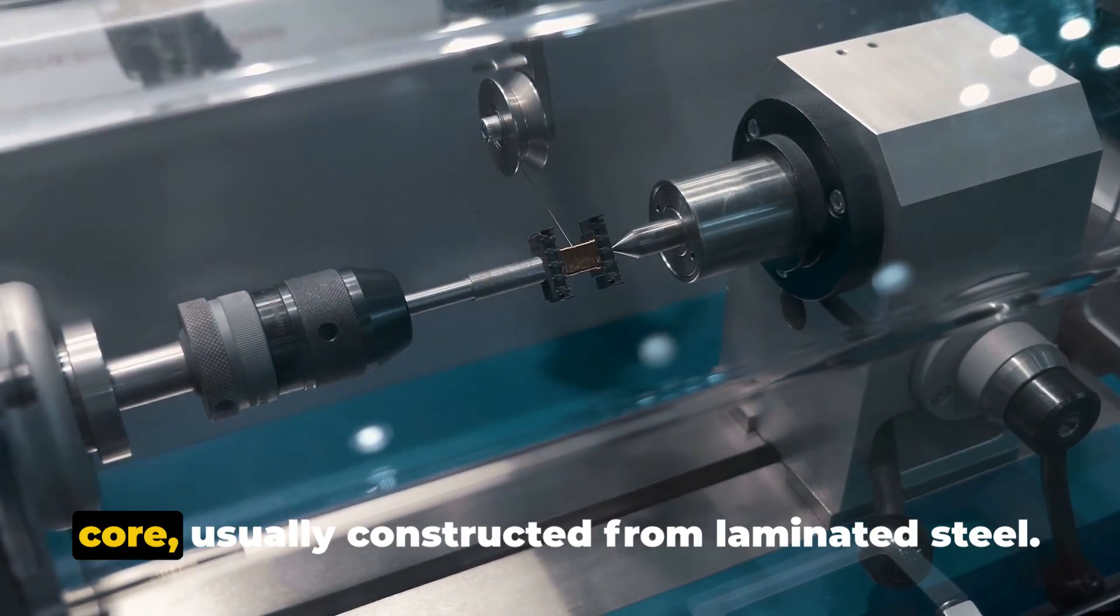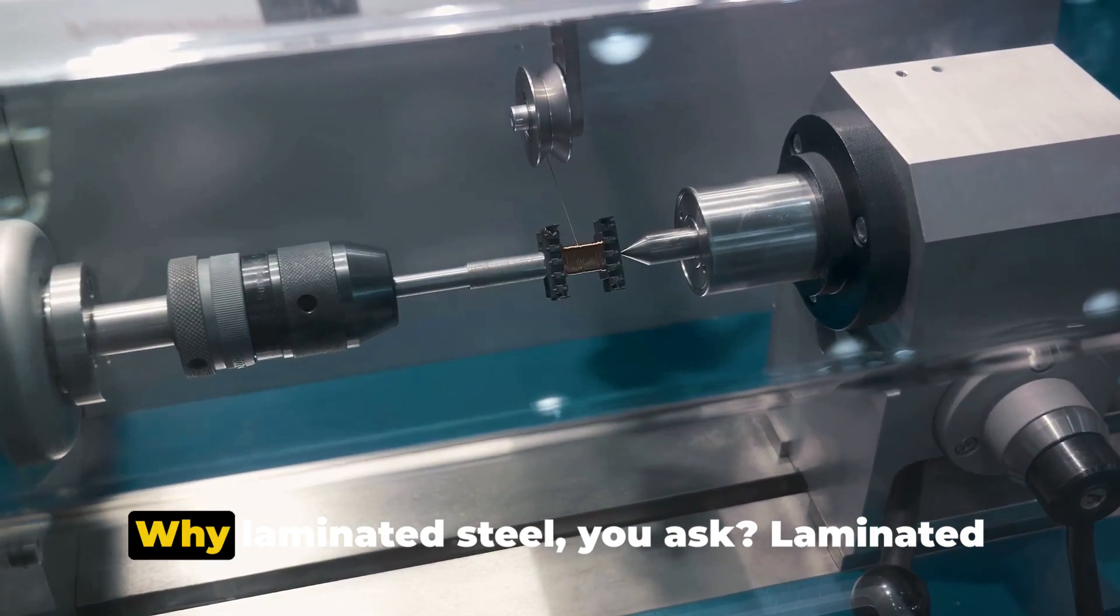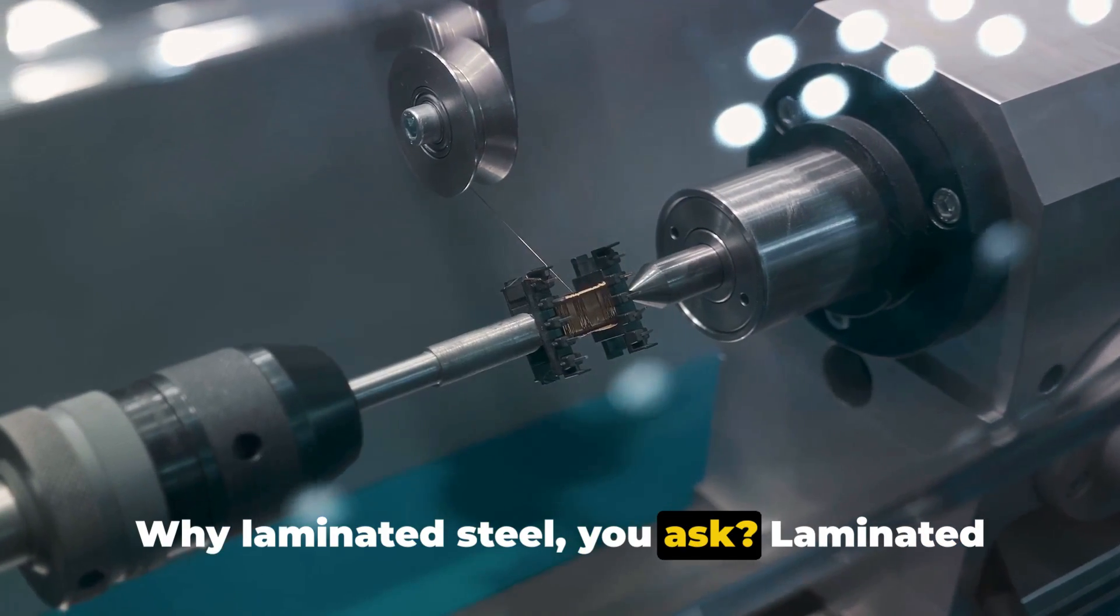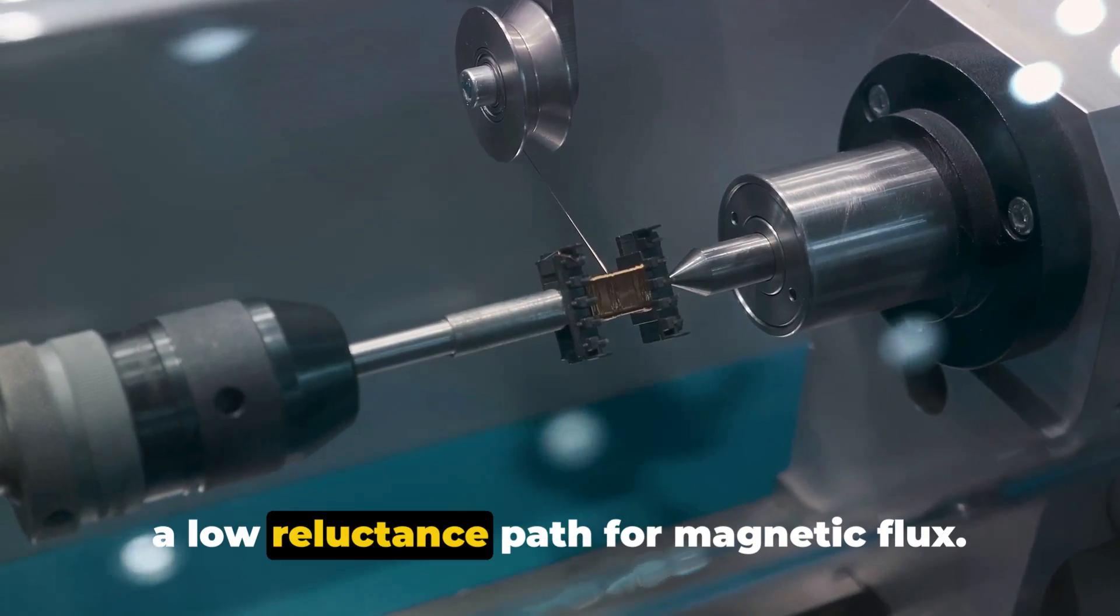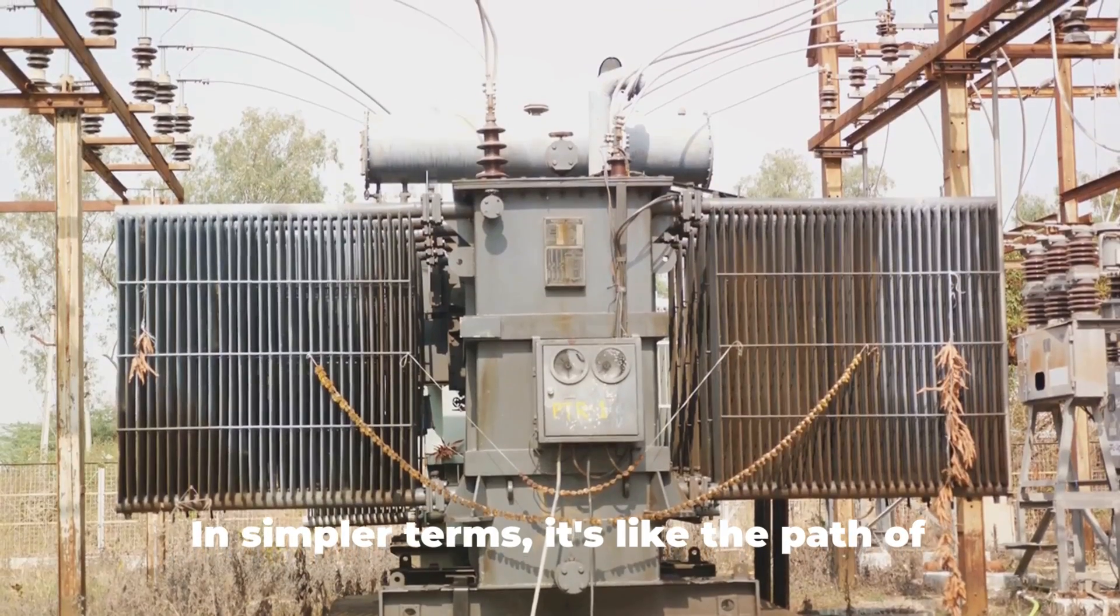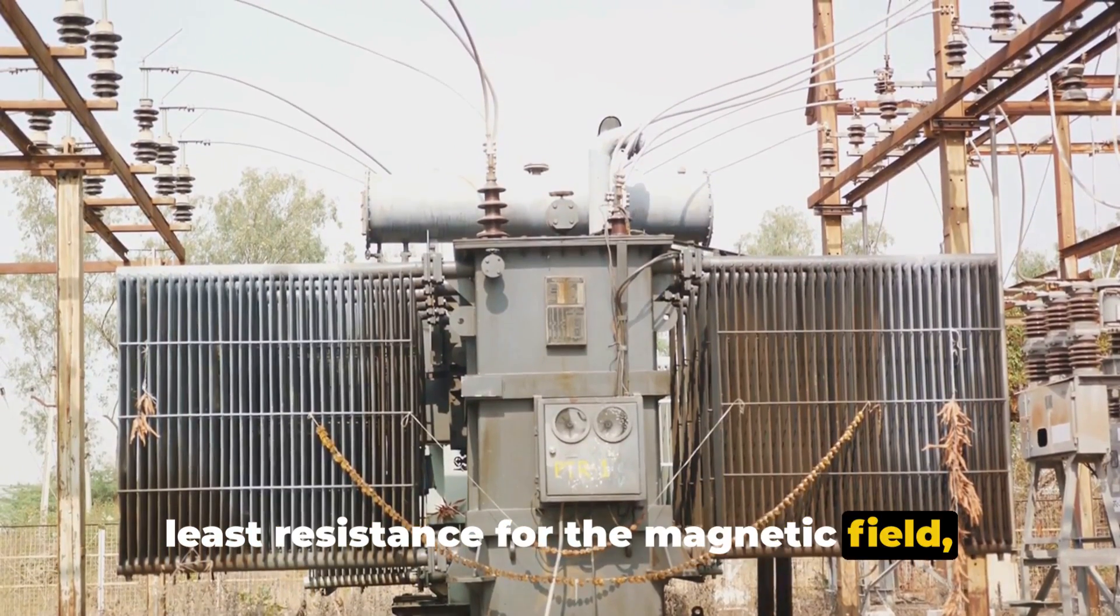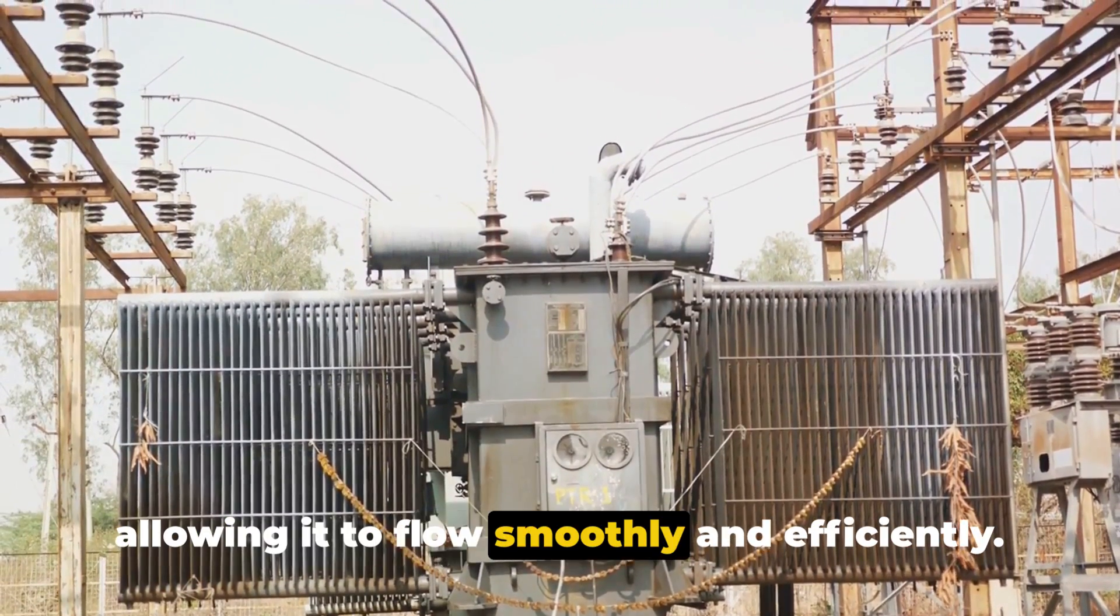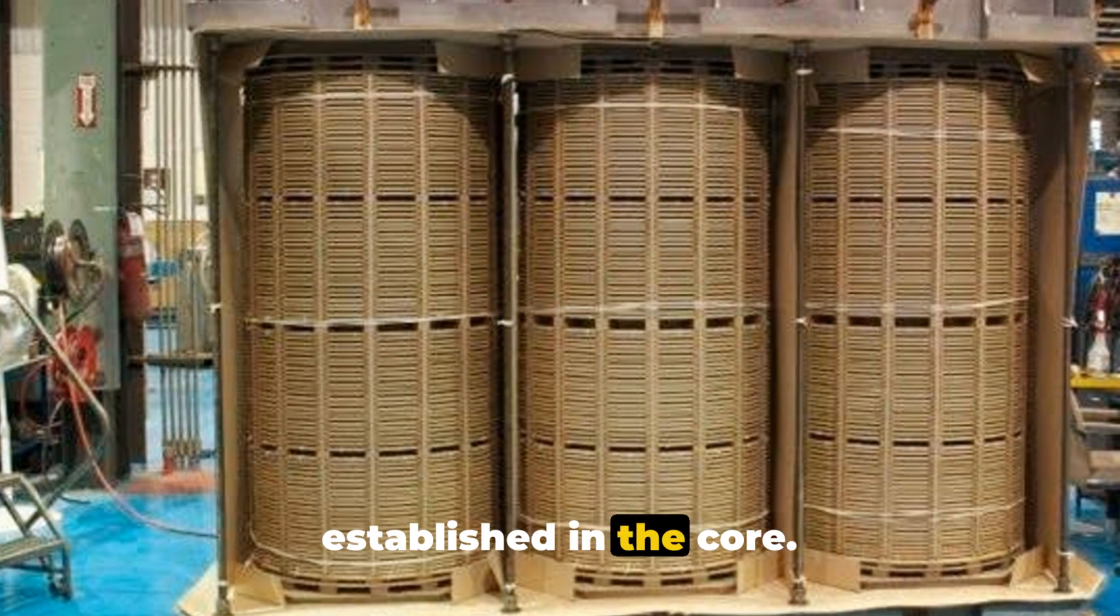At the heart of each transformer is the core, usually constructed from laminated steel. Why laminated steel, you ask? Laminated steel has the unique property of providing a low-reluctance path for magnetic flux. In simpler terms, it's like the path of least resistance for the magnetic field, allowing it to flow smoothly and efficiently, so we have this magnetic field established in the core.